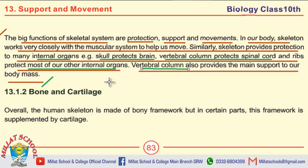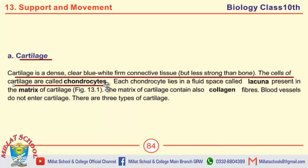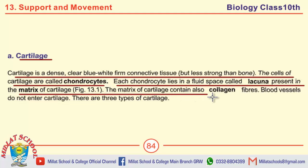The vertebral column provides the main support to our body mass. Next: define cartilage. Cartilage is a dense, clear, blue-white firm connective tissue, but less strong than bone. The cells of cartilage are called chondrocytes. Define chondrocytes: each chondrocyte lies in a fluid space called a lacuna, present in the matrix of cartilage. The matrix of cartilage also contains collagen fibers. Blood vessels do not enter cartilage.